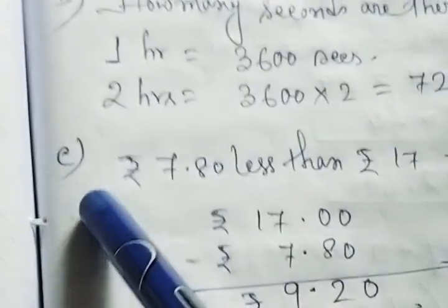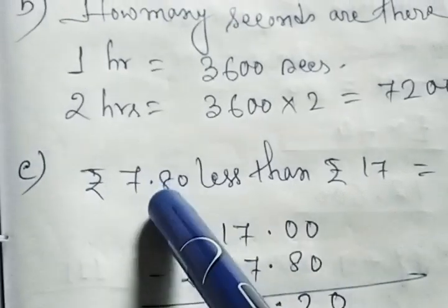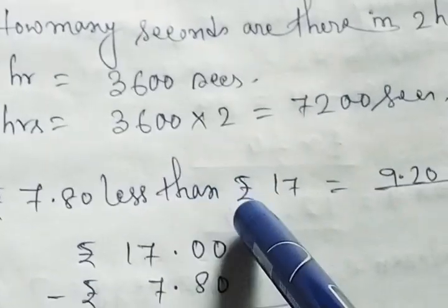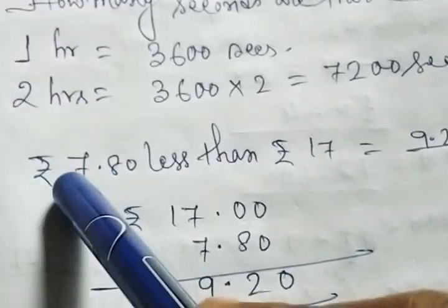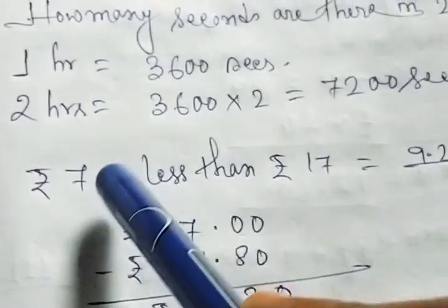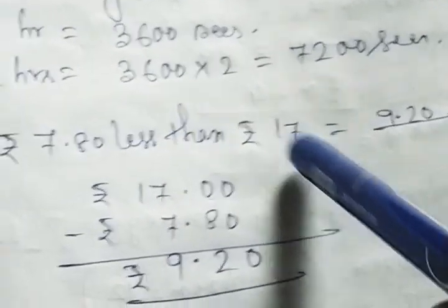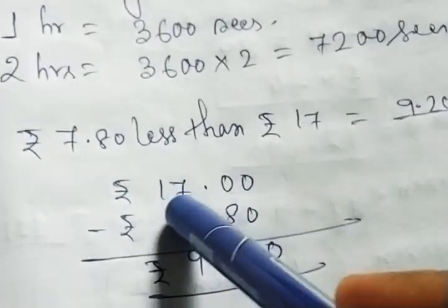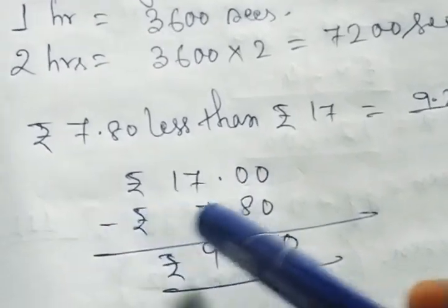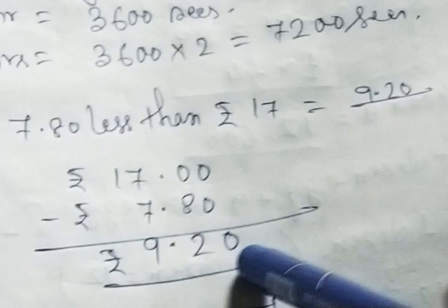Number C, rupees 7.80 less than rupees 17. Less than means subtract. I mean rupees 7.80 less than rupees 17. So, rupees 17 subtract 7.80. Answer will be 9.20.